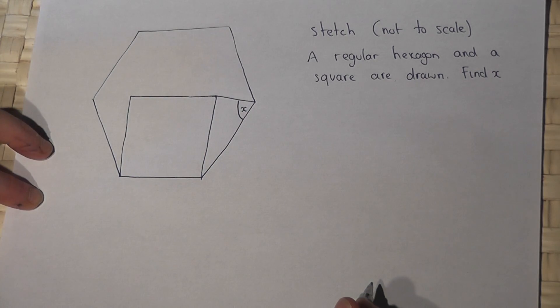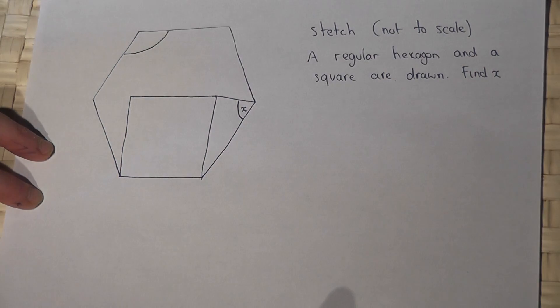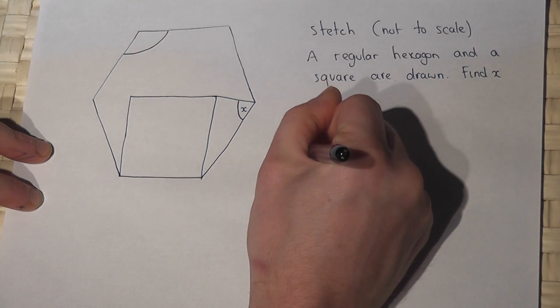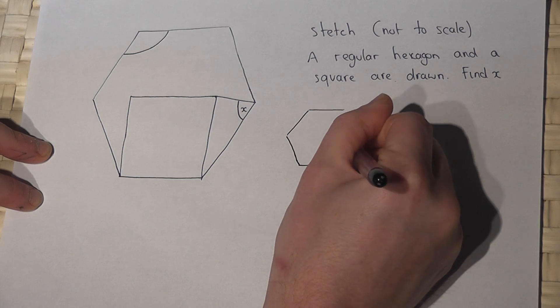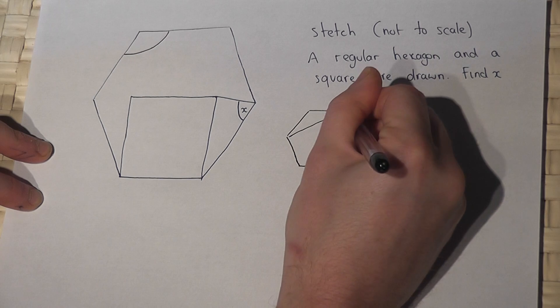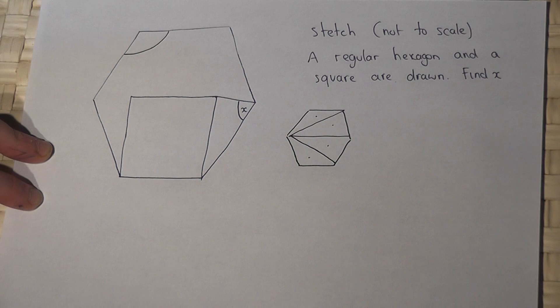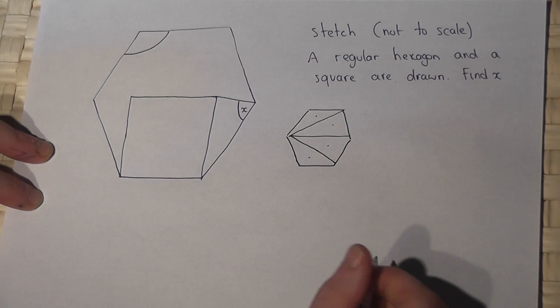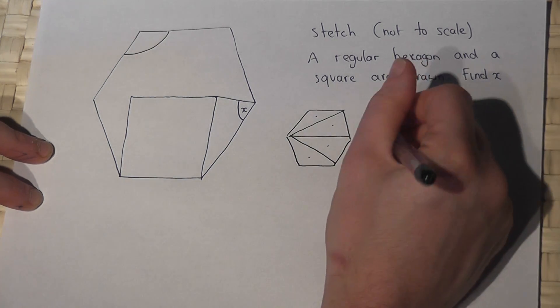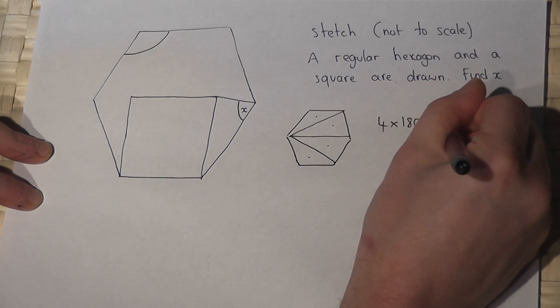I'm going to begin by finding the size of one of the interior angles of a regular hexagon. Now if I have a regular hexagon, I know that I can split this shape into one, two, three, four triangles. So therefore the sum of all the interior angles of a hexagon equals four lots of 180, which is 720.